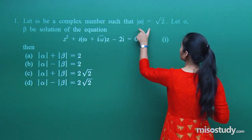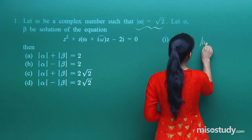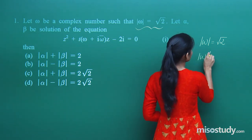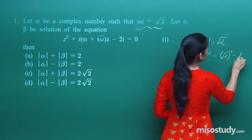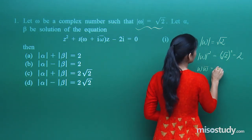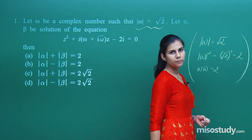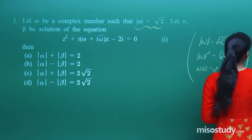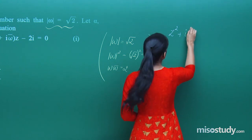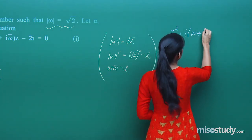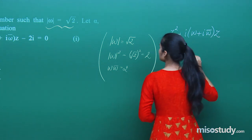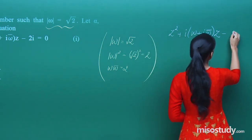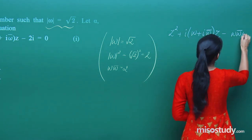If you talk about this particular relationship, given that mod omega is root 2, I know that mod omega squared will be root 2 squared which is 2. Mod omega squared is nothing but omega times omega bar. So you have omega omega bar which equals 2. Now consider this equation: z squared plus iota omega plus iota omega bar times z minus 2 iota. Now 2 can be replaced by omega omega bar iota, because everything is in terms of omega.